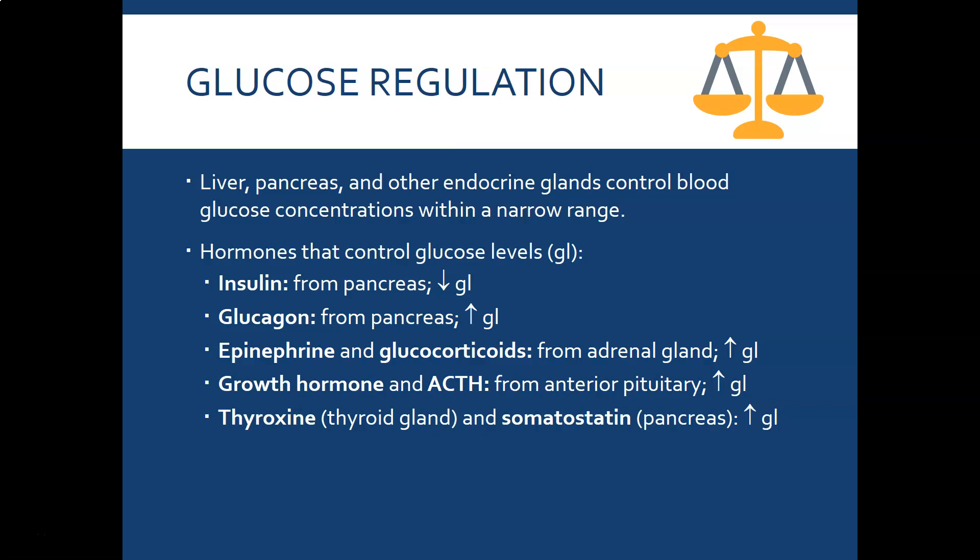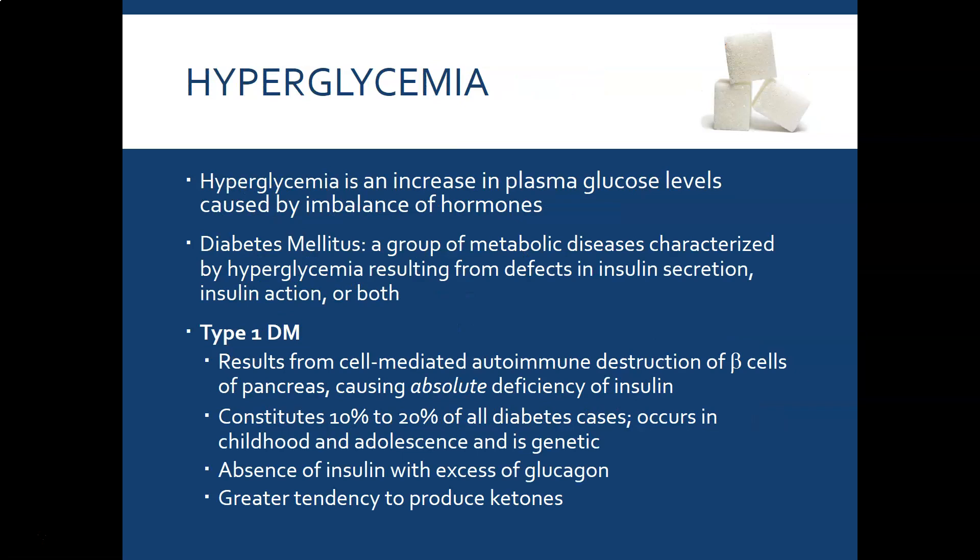Thyroxine, produced by the thyroid gland, and somatostatin, produced by the pancreas, will also both increase glucose. Thyroxine increases metabolic rate, and a higher metabolic rate means higher glucose demand. Hyperglycemia is an increase in plasma glucose levels and is usually caused by an imbalance of hormones.